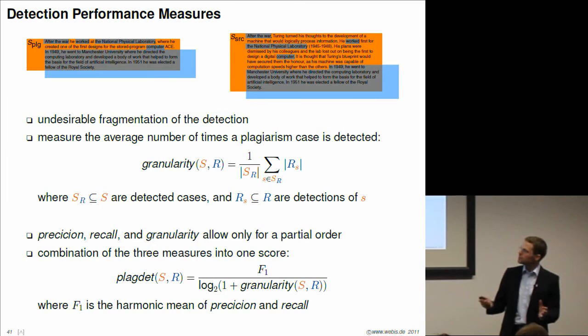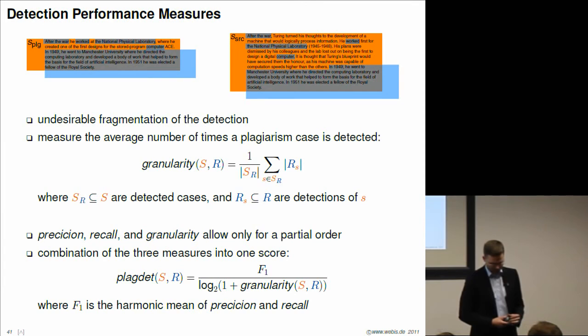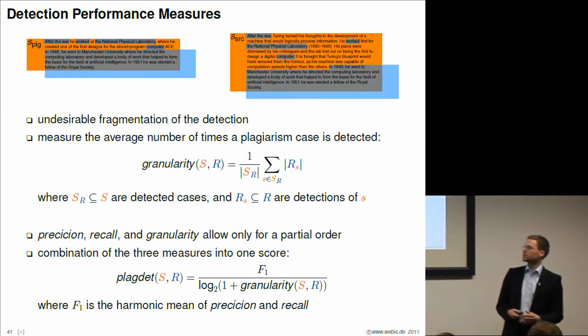These three measures allow only for partial order of plagiarism detection algorithms. In order to obtain a total order of plagiarism detection algorithms, we have to combine these values into one single score. This is accomplished by what we call the plagdet score.